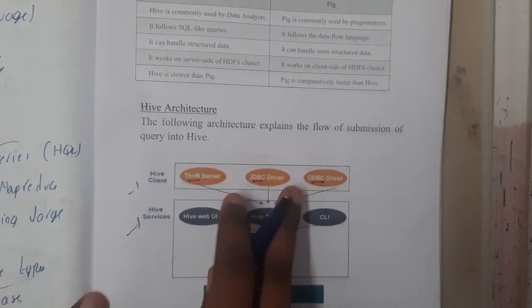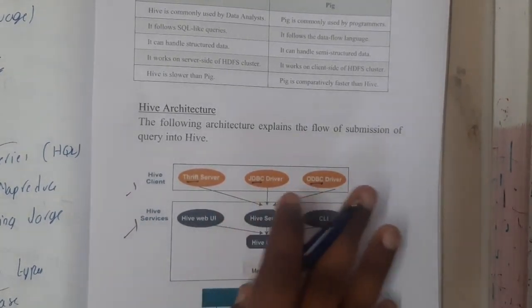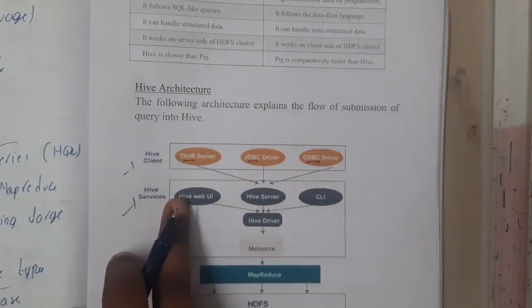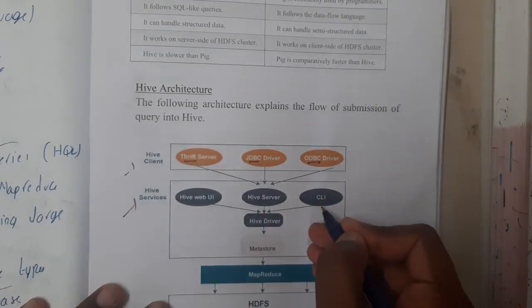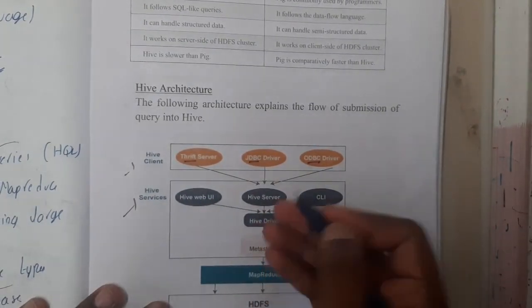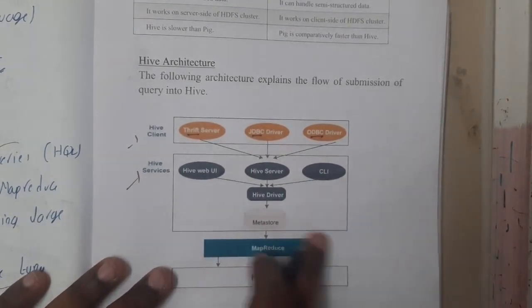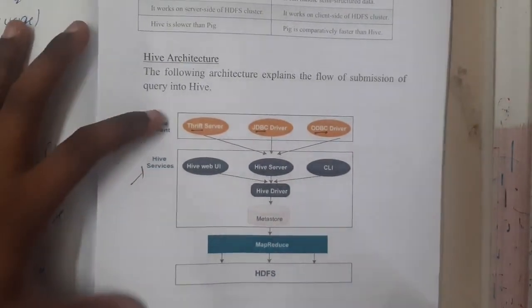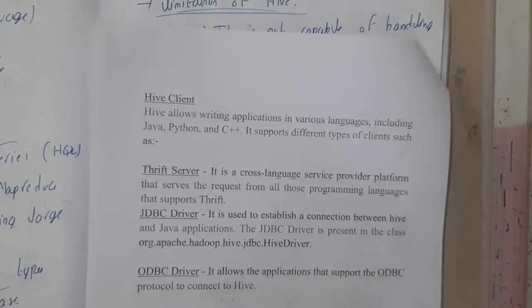We already know about JDBC and ODBC drivers from web technology. Similarly, Hive services can provide a Hive Web UI — you can create the front end, the CLI, and the server and drivers. We also have a Metastore, and from the Metastore the data is processed and stored into HDFS.